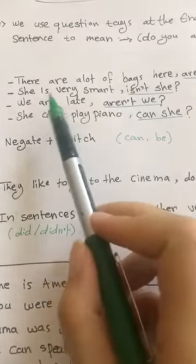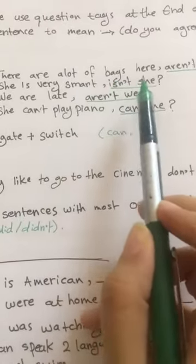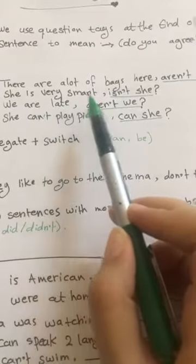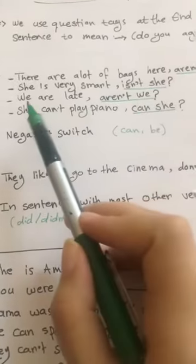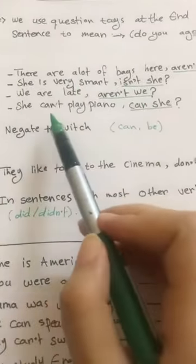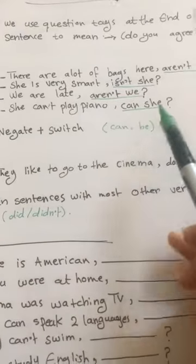Let's see the examples. There are a lot of bags here, aren't there? She is very smart, isn't she? We are late, aren't we? She can't play piano, can she?